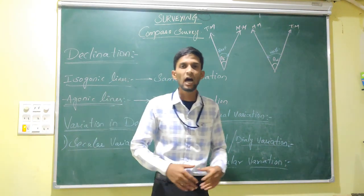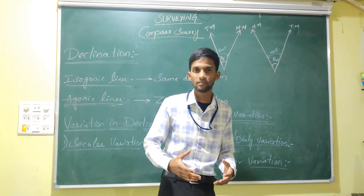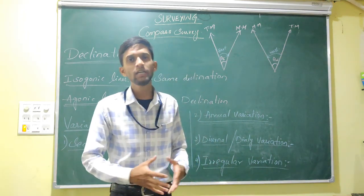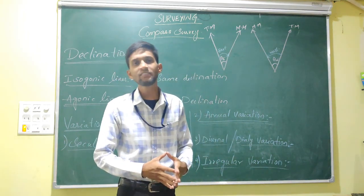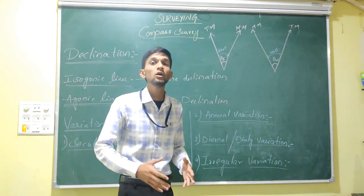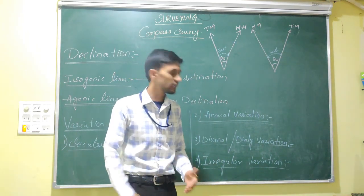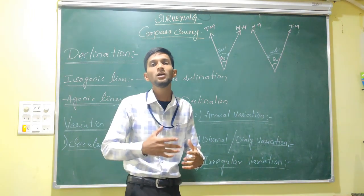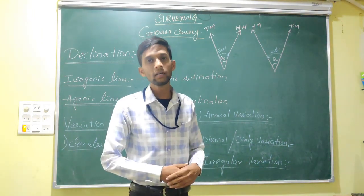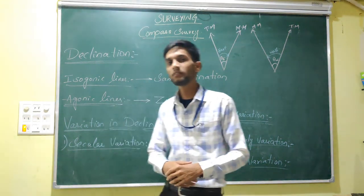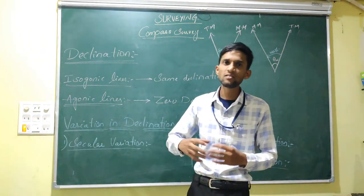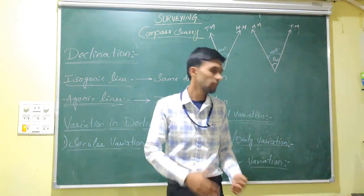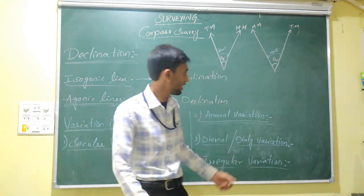Sometimes an earthquake happens, or some other natural disaster will occur. By that, irregular variations will occur — a sudden change in the declination. This is called irregular variation.